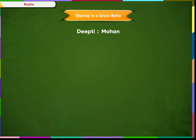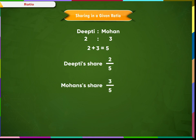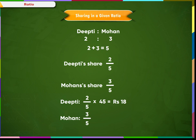We can also solve this problem algebraically. Since Deepti's share to Mohan's share is 2 is to 3, the total share is 2 plus 3 equal to 5. Deepti's share is 2 parts out of 5, that is 2 by 5. Mohan's share is 3 parts out of 5. So Deepti gets two-fifths of Rs. 45, which gives Rs. 18. And Mohan gets three-fifths of Rs. 45, which gives Rs. 27.